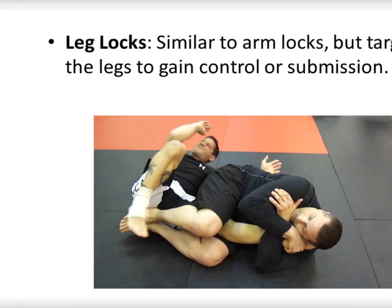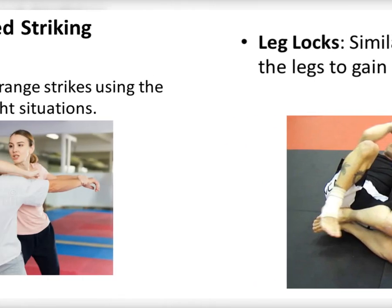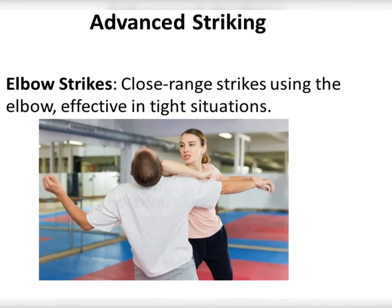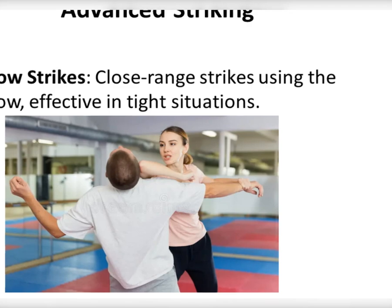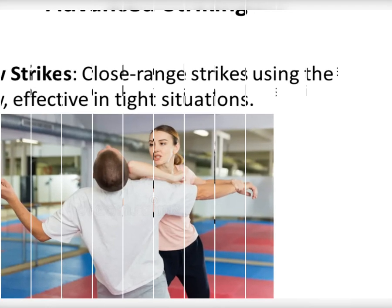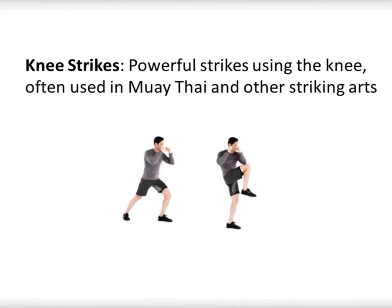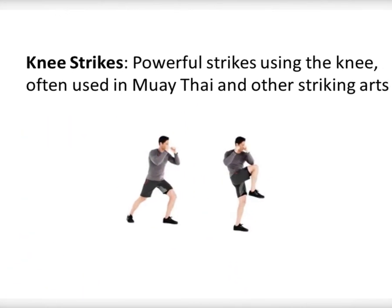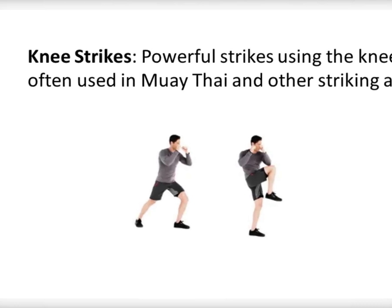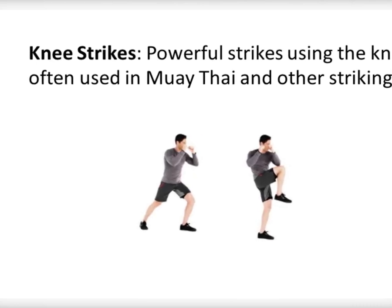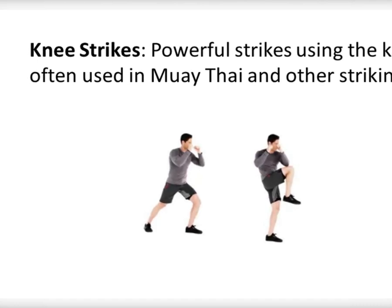Advanced Striking. Elbow Strikes: Close range strikes using the elbow, effective in tight situations. Knee Strikes: Powerful strikes using the knee, often used in Muay Thai and other striking arts.